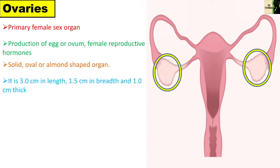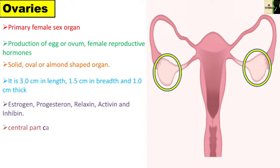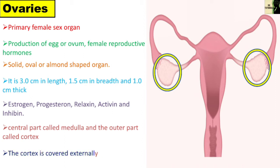The ovary produces five hormones: estrogen, progesterone, relaxin, activin and inhibin. Each ovary is a compact structure differentiated into a central part called medulla and the outer part called cortex. The cortex is covered externally by a layer of germinal epithelium.